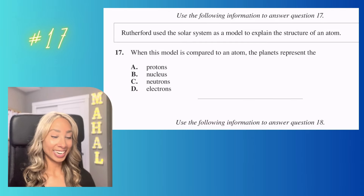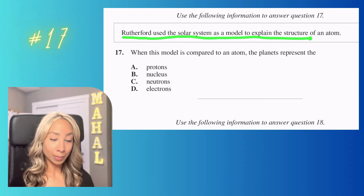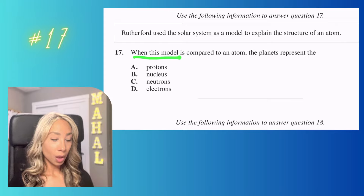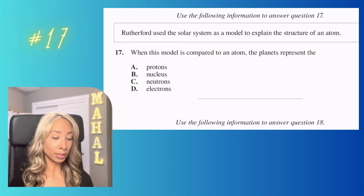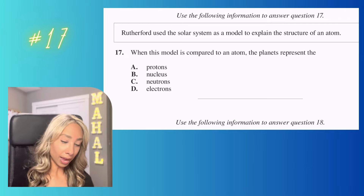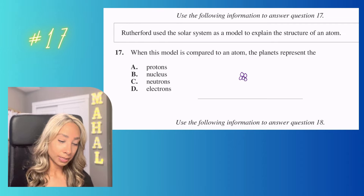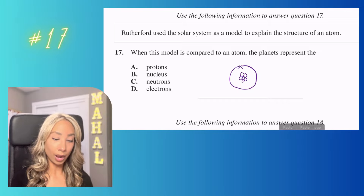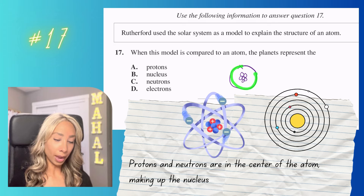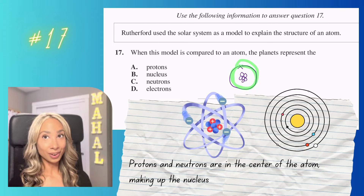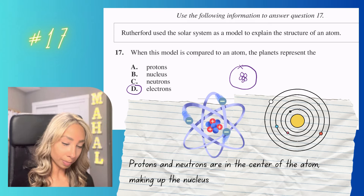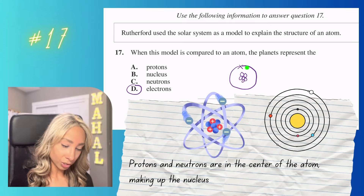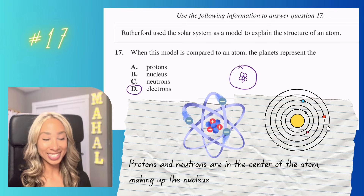Number seventeen: Rutherford used the solar system as a model for the atom. In that model, the planets orbit the sun. Thinking about what orbits the center of an atom — it's the electrons. So when comparing Rutherford's model to an atom, the planets represent the electrons. The answer is D.